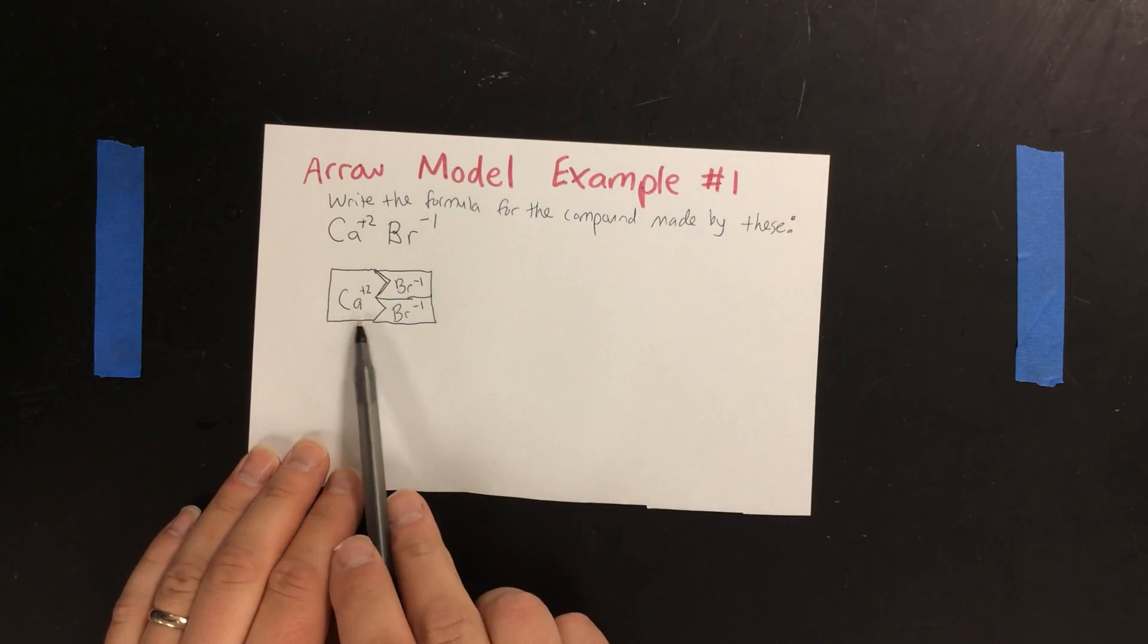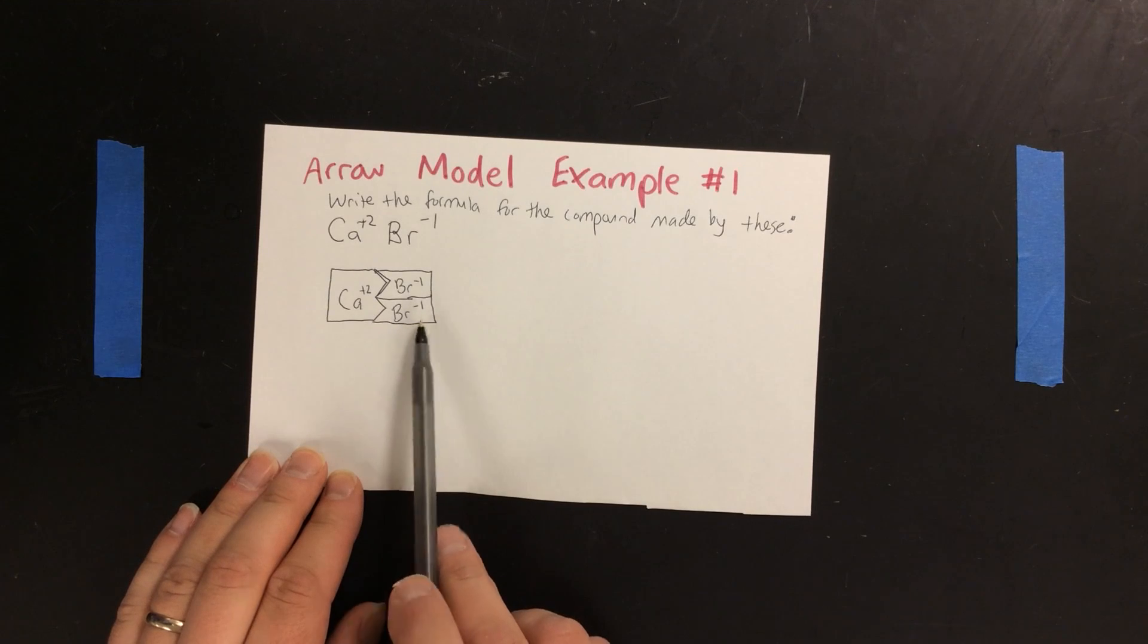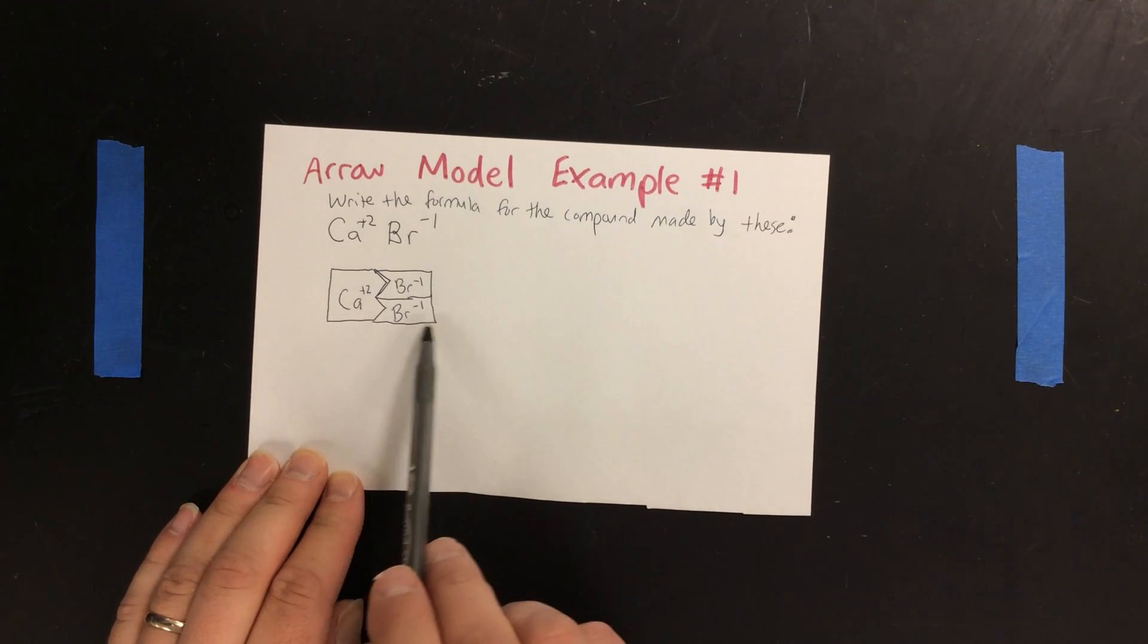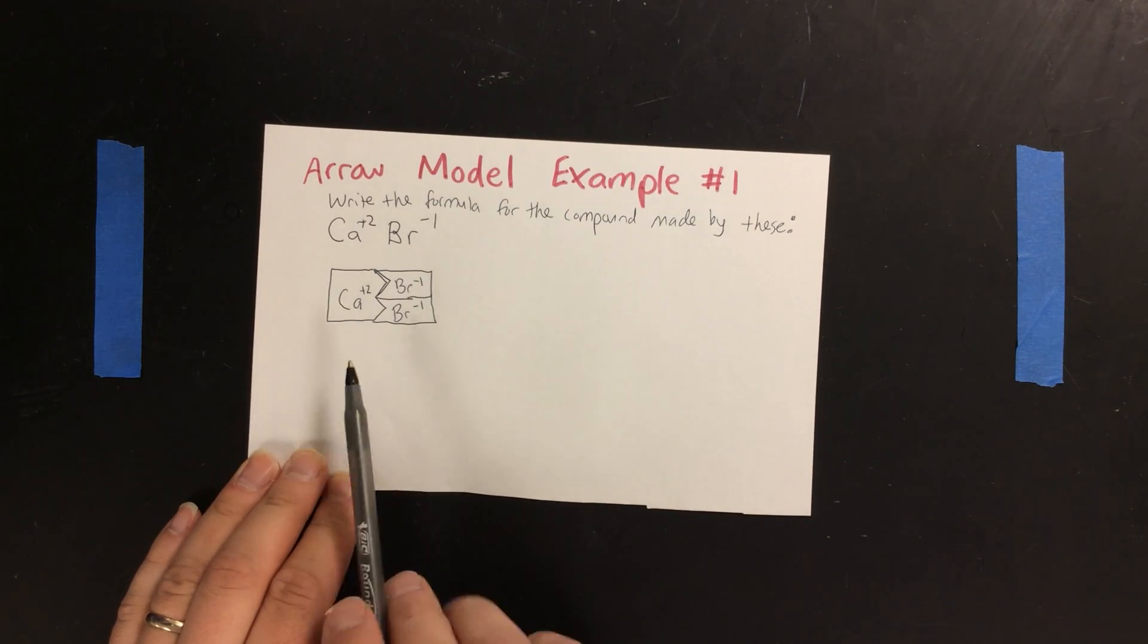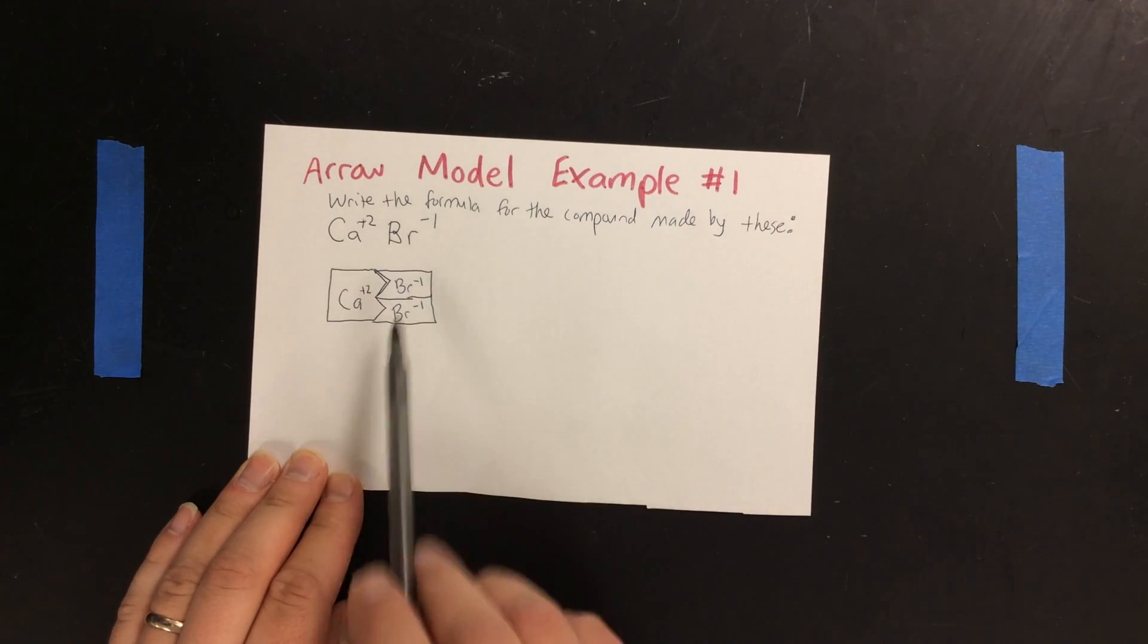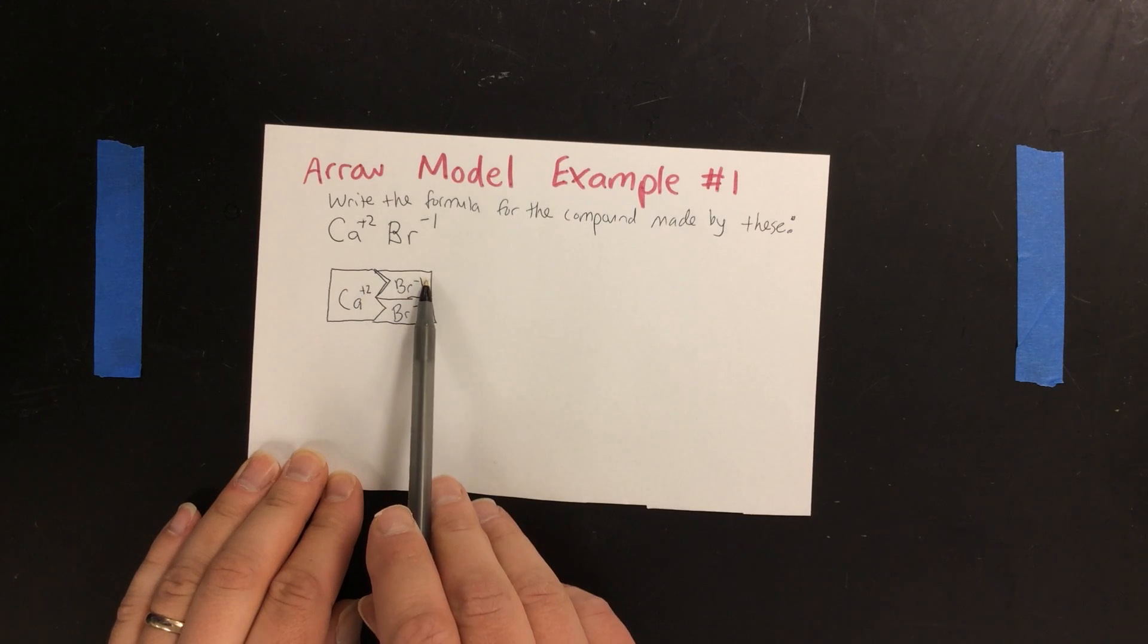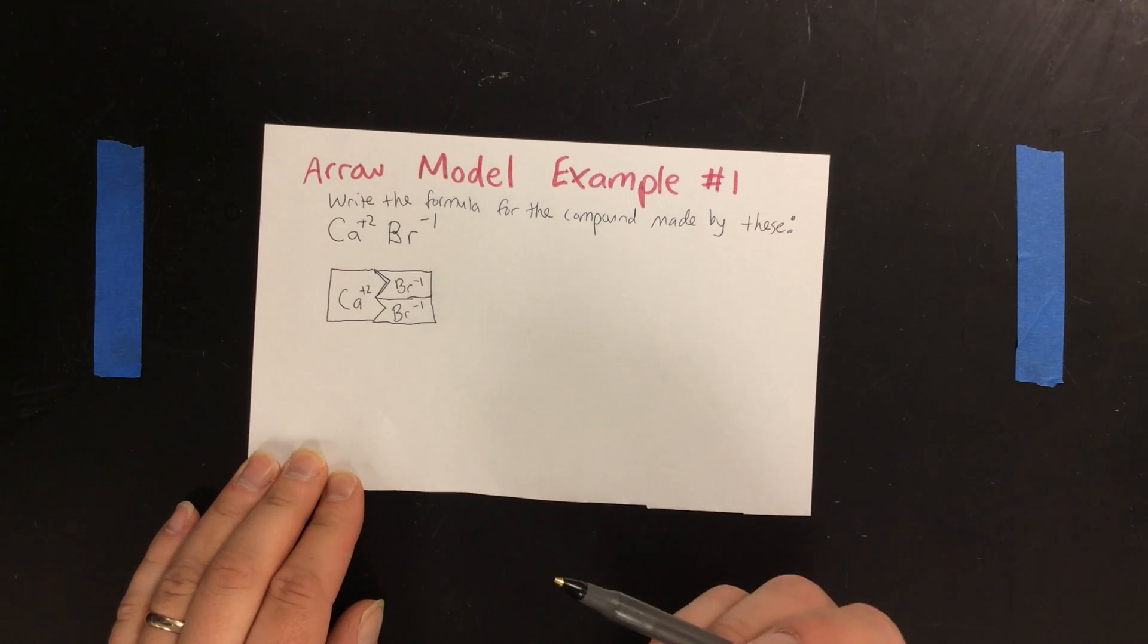This arrow model represents the compound we would have. You can double check because it makes a perfect rectangle. Also, you can verify that the charge must add up to zero. We have plus two, minus one, minus one, which gives you zero.